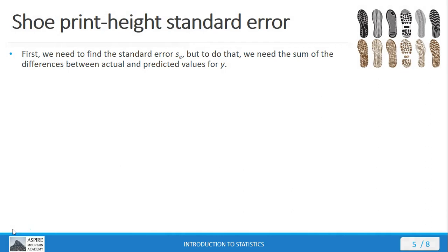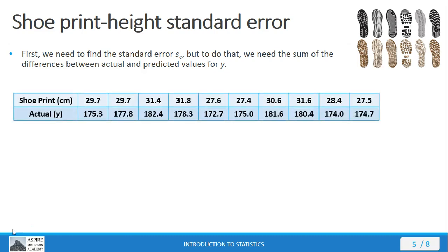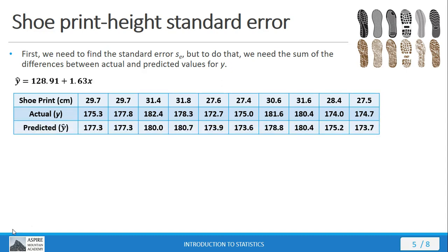First, we're going to do this by hand and show you what a nightmare this is. We're going to calculate the standard error. But to do that, we first got to get the sum of the differences between the actual and predicted values for y. The best way to do that is just make out a table like what you see here. Here's our original data, and then we're going to take our regression equation and we're actually going to use that to make predicted values of y for each value of x. Then we're going to take the differences between the actual and the predicted values.